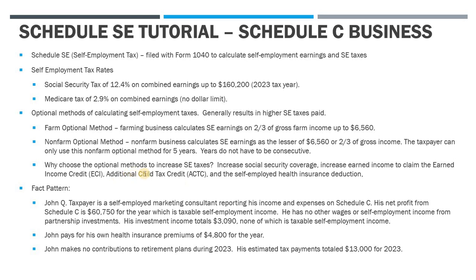Why would you ever want to pay more in self-employment taxes? There are a couple of reasons. First, an increase in Social Security coverage — the more you pay into Social Security, the more you can claim when you retire. Second, you can increase your earned income for certain tax credits like the Earned Income Tax Credit or the Additional Child Tax Credit. If you have low or negative self-employed income you often can't claim those credits, but if you opt to use one of these optional methods you might be able to.